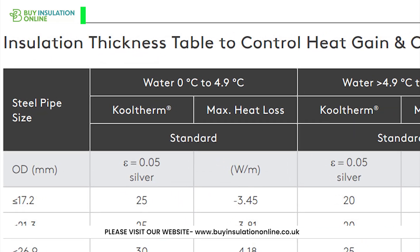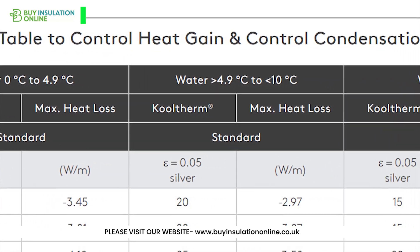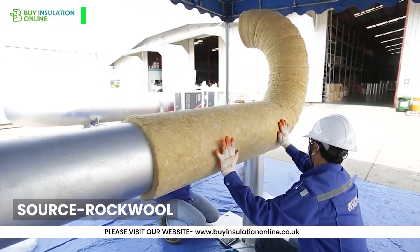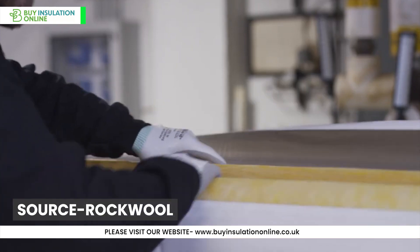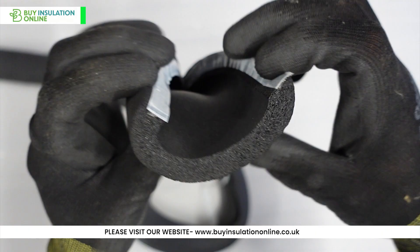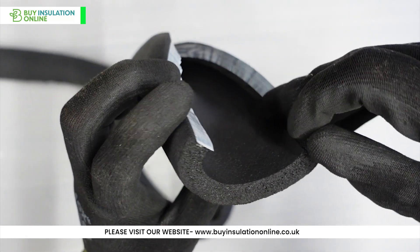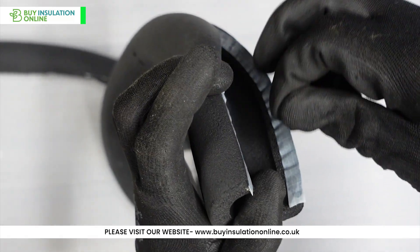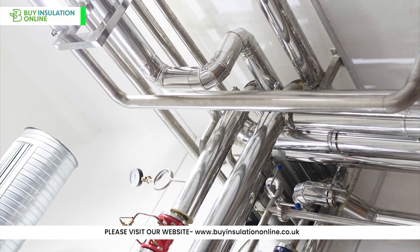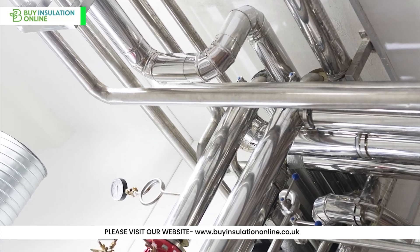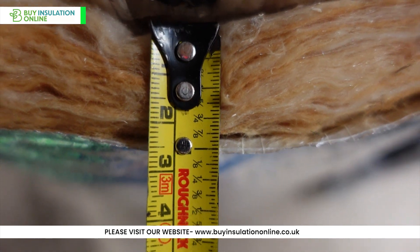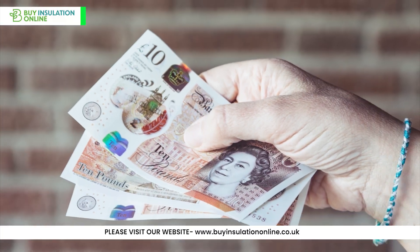It's probably obvious to most that the thicker the insulation, the better the thermal insulation. However, thicker insulation can also be more expensive and difficult to install. The laws of diminishing returns also make it less efficient to install pipe insulation that is thicker than what has been established as optimal in controlled laboratory tests. It is important to strike a balance between cost, practicality and performance when selecting pipe insulation thickness in order to ensure that it is practical and financially feasible.